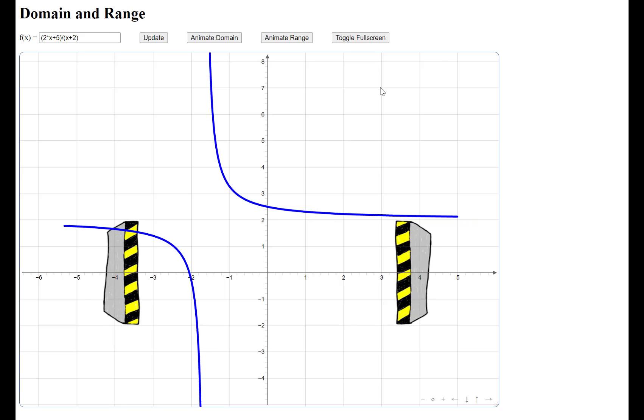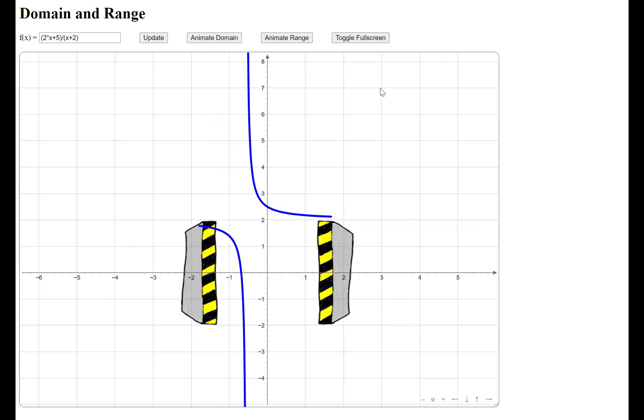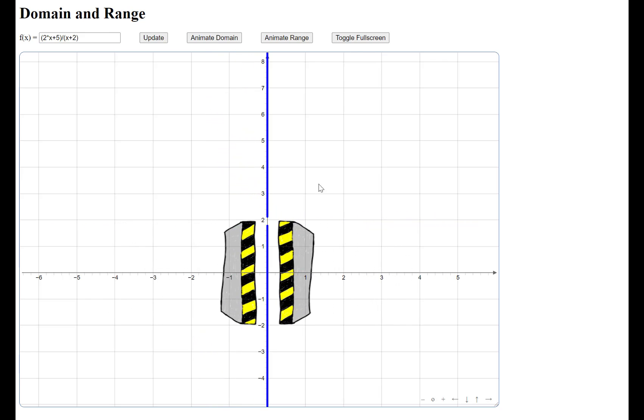The range is similar, except when we crush everything up against the y-axis, what ends up happening is we have the set of all values from negative infinity up to positive 2, but not including positive 2 because of the horizontal asymptote, and then the range from 2 to positive infinity.